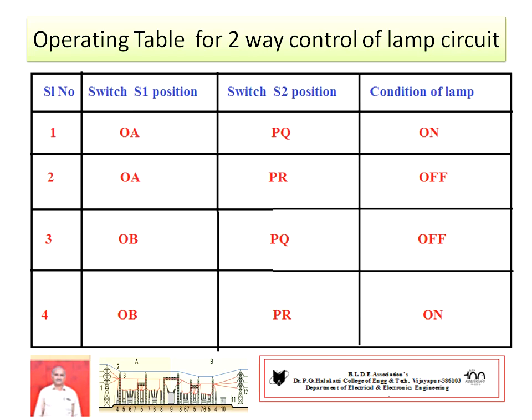In this experiment there is no calculation. You only have to remember the working table or operating table of the lamp for different switch positions. S1 in OA and S2 in PQ: lamp ON — closed circuit. S1 in OA and S2 in PR: lamp OFF — open circuit. S1 in OB and S2 in PQ: lamp OFF — open circuit. S1 in OB and S2 in PR: lamp ON — closed circuit.